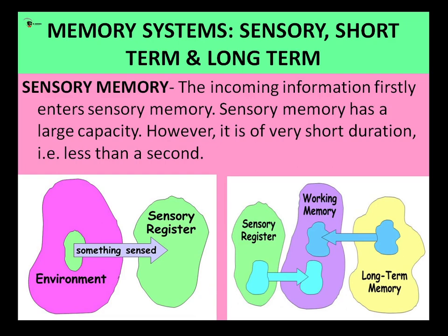So here we have the sensory memory. Let us understand what sensory memory is. The incoming information has to firstly enter the sensory memory. Even though it has a large capacity, in terms of duration — how long it can actually hold on to the information — that is quite minimal. It can hold information for less than a second. The sensory registers or sensory memories can exist in different forms.